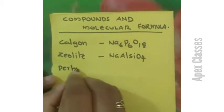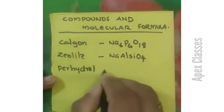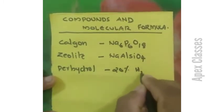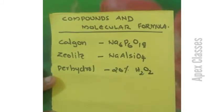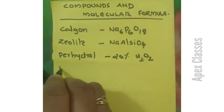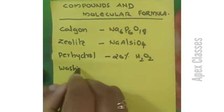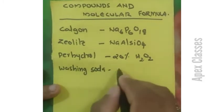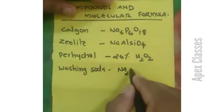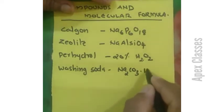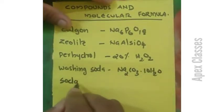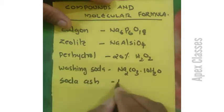Perhydrol is 20% H2O2. Washing Soda is Na2CO3·10H2O. Soda Ash is Na2CO3.